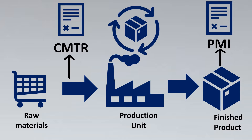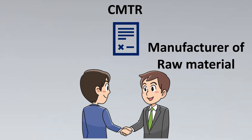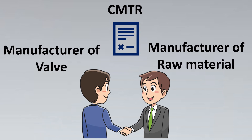Now let's look a bit deeper into CMTR, because it is further subdivided. Before we get into its divisions, let's cover the concept of when and who gives the CMTR. Basically, the Material Test Report is given by the manufacturer of the raw material to the manufacturer of the valve. For example, if the valve requires Hastelloy or SS316L, the raw material vendor would give a certificate stating that they have supplied that particular grade only.